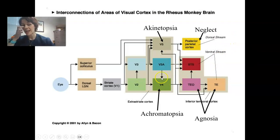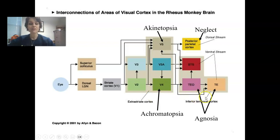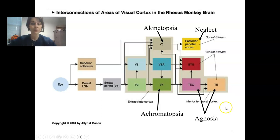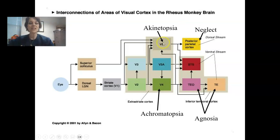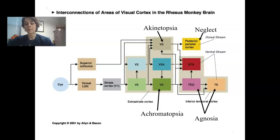We talked about achromatopsia, which typically occurs due to damage to area V4. And then we also talked about various types of agnosia, which usually result due to damage in the inferior temporal cortex. Today, we're going to talk about disorders that happen due to damage to the dorsal stream — our where pathway. That's going to be achromatopsia, which occurs due to damage to V5, and the posterior parietal cortex, which when damaged causes a disorder known as neglect.